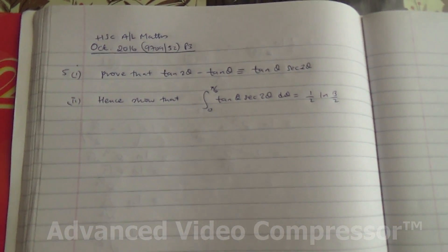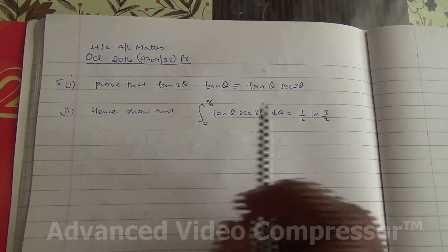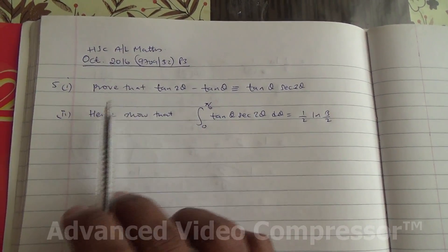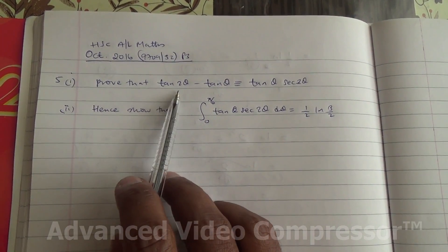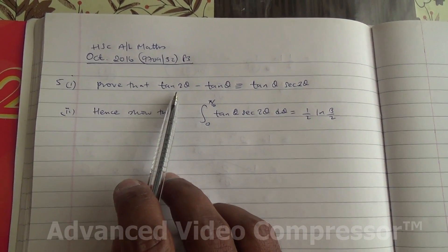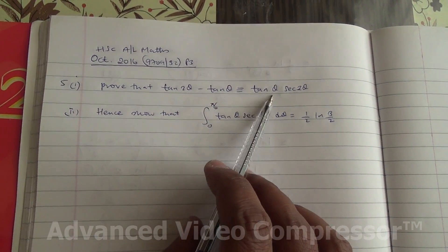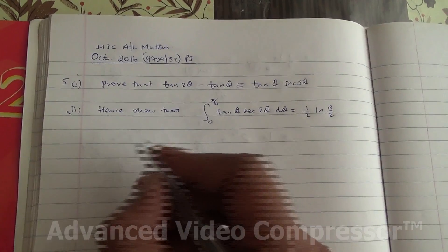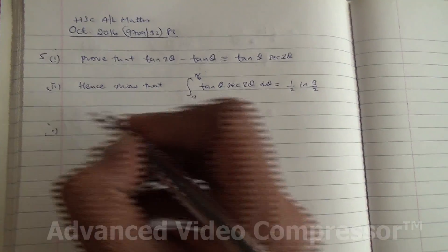Hi, this question is taken from October 2016, A-level Maths HSC P3. For the first part, we need to prove that tan(2θ) minus tan(θ) is going to be equal to tan(θ)sec(2θ). So let's do the first part.